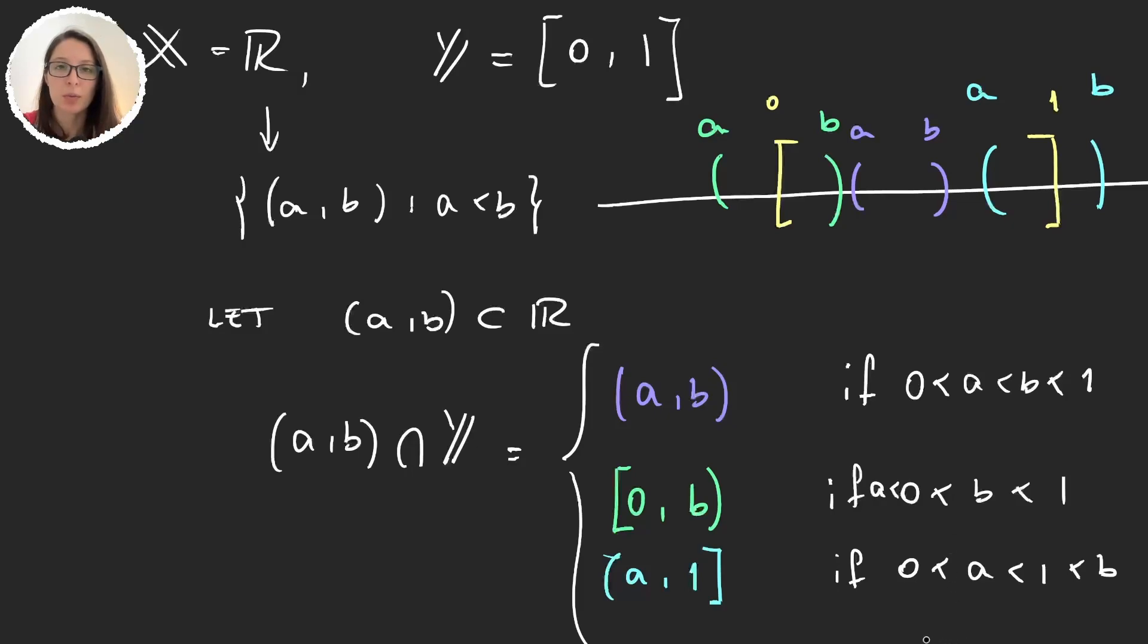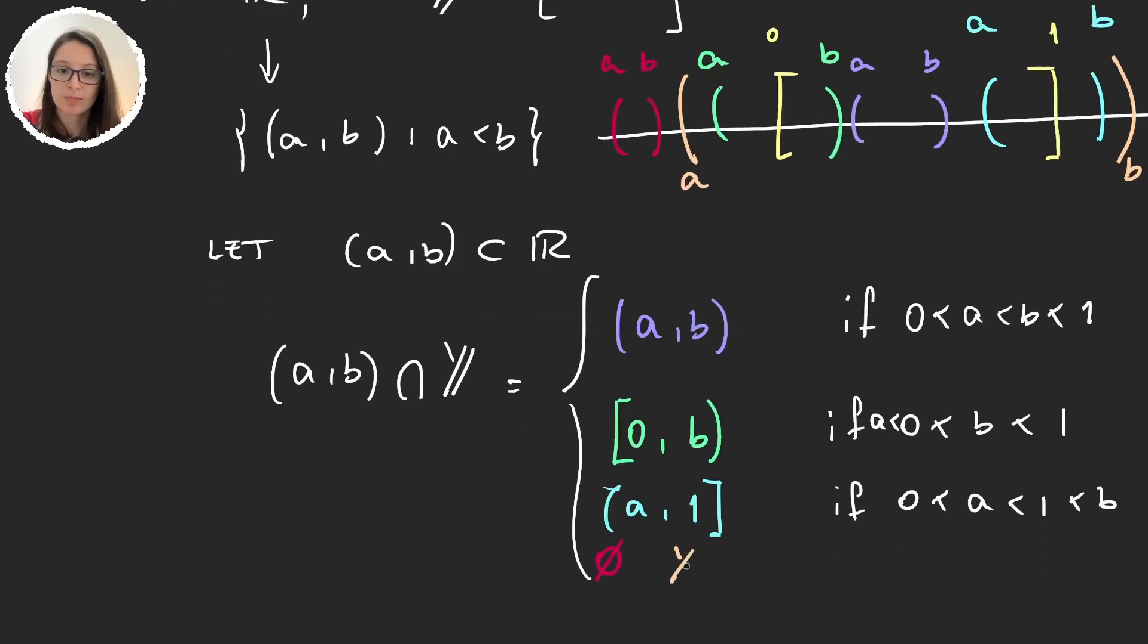Is this everything or do we have more examples? If my interval was somewhere here, the intersection with the [0,1] is empty. And what if my interval was like this? Well then, this interval is so big that the intersection with the [0,1] is the [0,1] itself. So it's giving me my whole set. And I'll just write here otherwise.